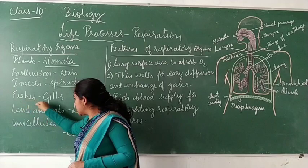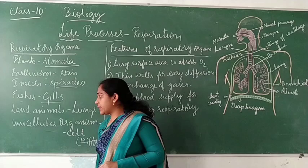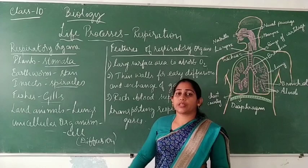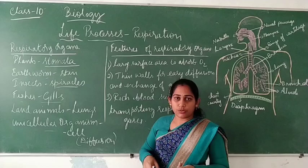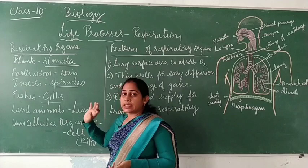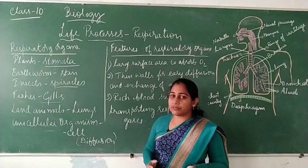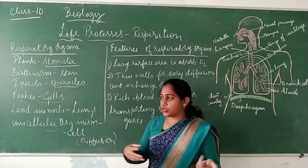Fishes have a special organ called gills. Fishes live in water and get their oxygen from the dissolved oxygen in the water. Gills are a structure that helps absorb oxygen which is in dissolved form in the water, allowing fishes to take in the oxygen they need to survive.